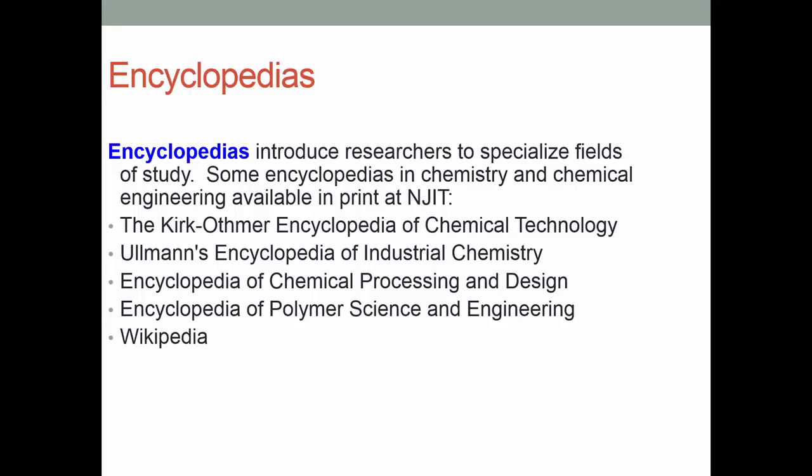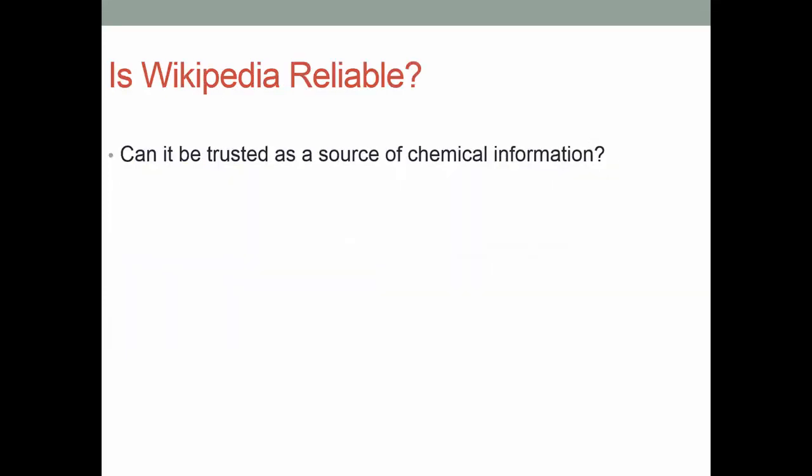Encyclopedias, by their nature, are very general. They introduce people to a specialized field of study. We have a handful in print format: the Kirk-Othmer Encyclopedia of Chemical Technology, Ullmann's Encyclopedia of Industrial Chemistry, and so on. If you're really not familiar with a topic, an encyclopedia is a good place to start your research. And of course there's Wikipedia, which has become very popular over the last 10 to 15 years.